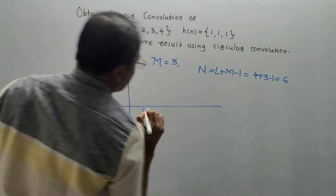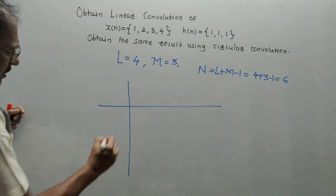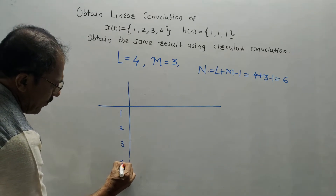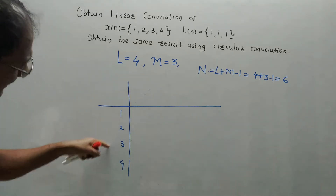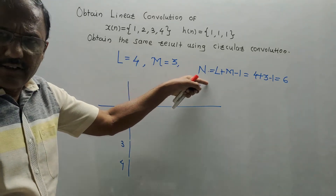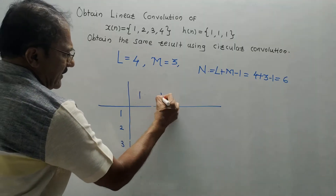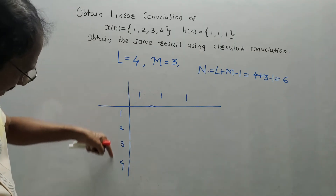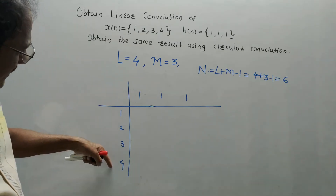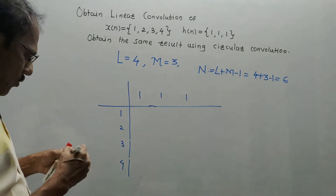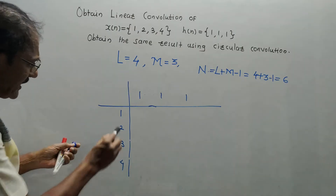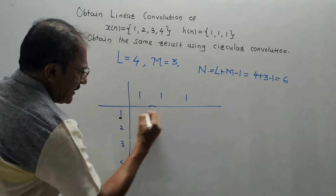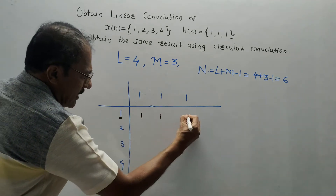I will draw a table. I will write sequence x(n) vertically: 1, 2, 3, 4. Any sequence can be written vertically and another horizontally — we can interchange them. I have written x(n) vertically and h(n) horizontally. Consider the first element, which is 1: multiply every term of h(n) by it to get 1, 1, 1.